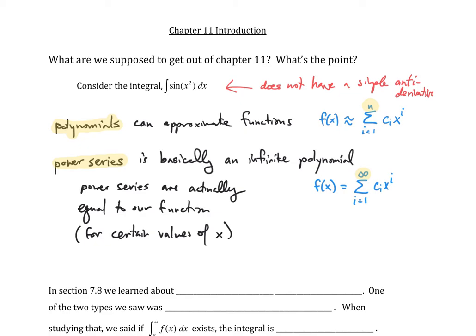So really, the ultimate goal of chapter 11 is really to find power series of functions, power series of functions like sine of x squared, for example. And we also actually need to worry about this 'for certain values of x' question. In other words, for which values of x is this power series going to add up to a finite number and actually equal our function?